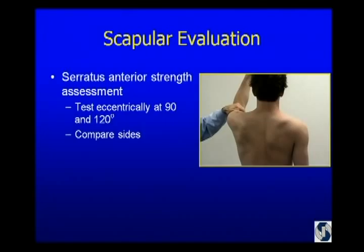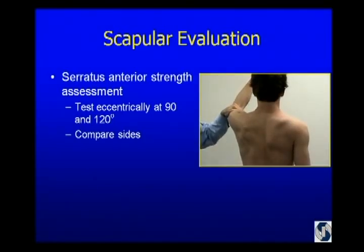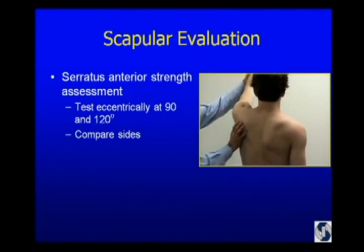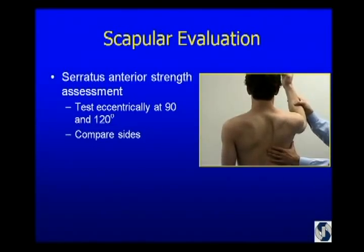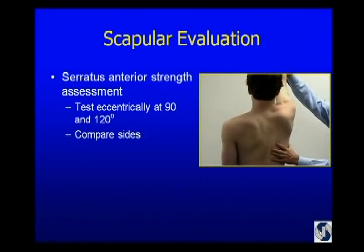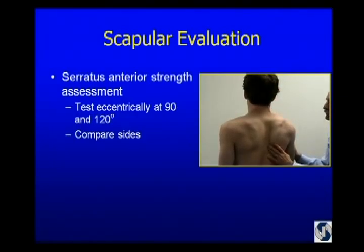Finally, serratus anterior testing. I don't test it with a wall push-up because I don't think it's very accurate — I test it eccentrically by putting the muscle out to length. The serratus anterior, as we were taught, is a protractor — it brings the shoulder forward and up on the thorax. But if you think about what it does eccentrically in the thrower, it's an external rotator of the scapula. I want to test it in the way it's going to function. On the unaffected side at 90 and 120 degrees, he's got very good strength. On this side, he's not bad at 90, but you can see he's already starting to cheat by bringing his upper trapezius in. This young man wound up having long thoracic mononeuropathy, so rehabbing his serratus anterior was going to be quite a project.